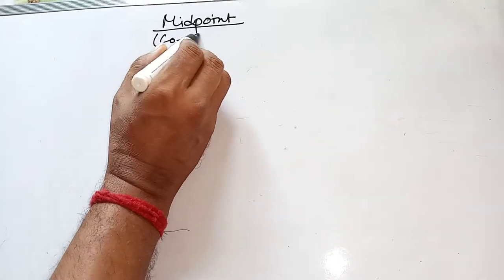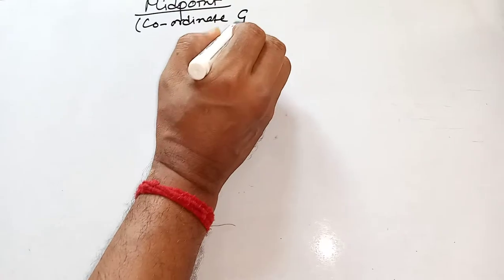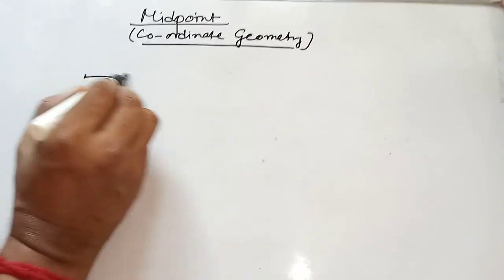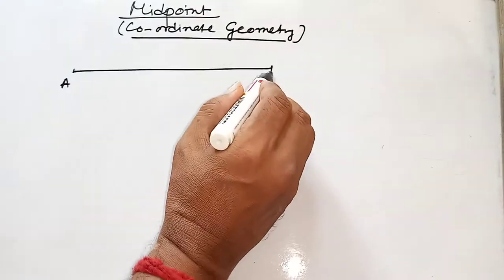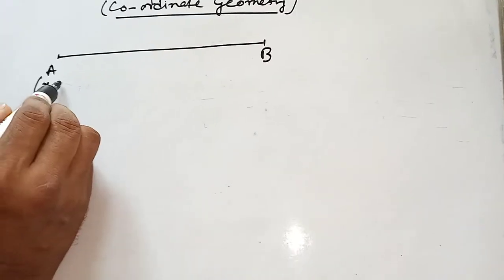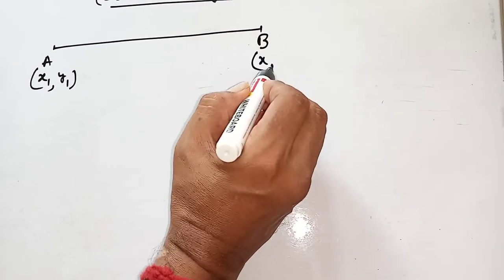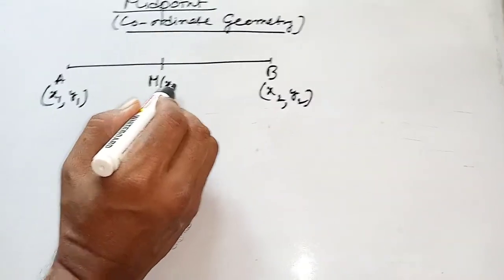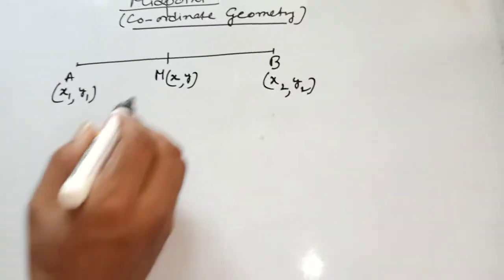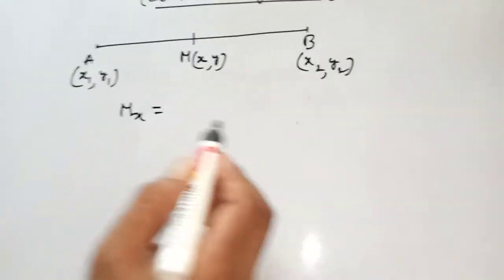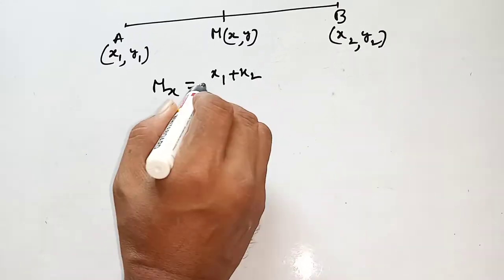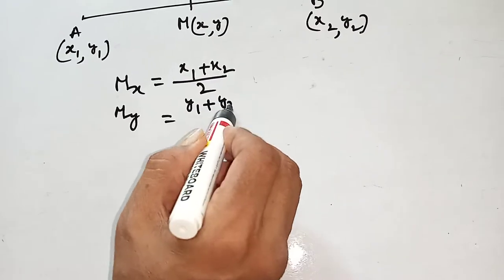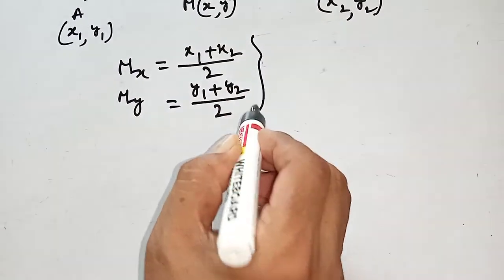Midpoint coordinate formula. Say AB is a straight line. The coordinate of A is (x1, y1) and B is (x2, y2). Now find the midpoint of AB: mx equals x1 plus x2, and my equals y1 plus y2 divided by 2. This is the midpoint formula for M.